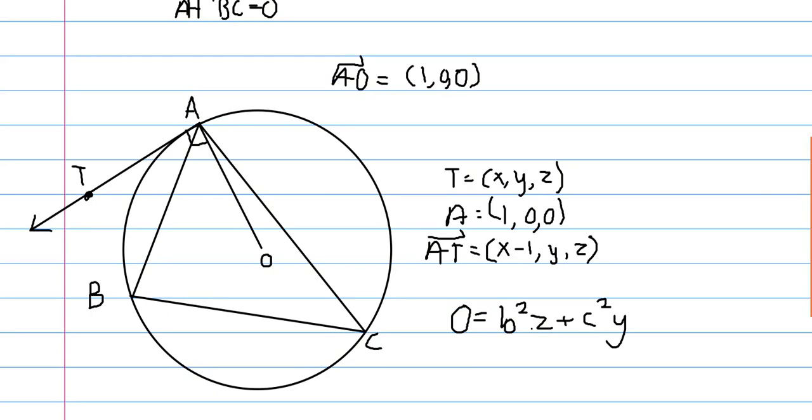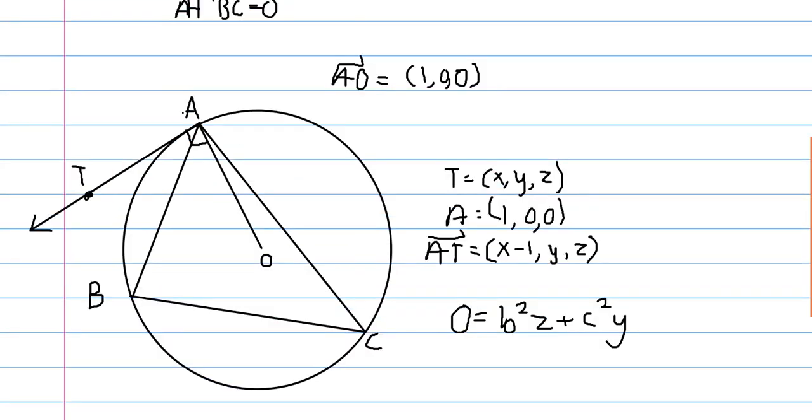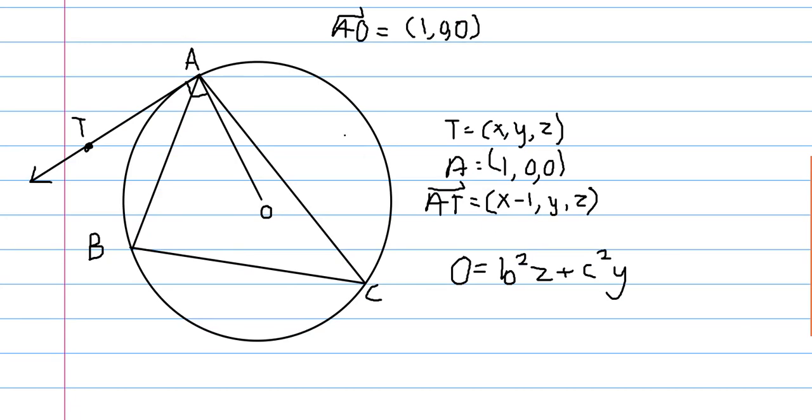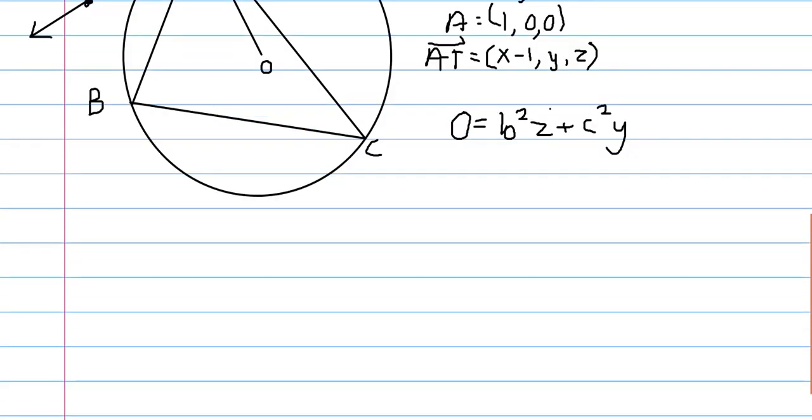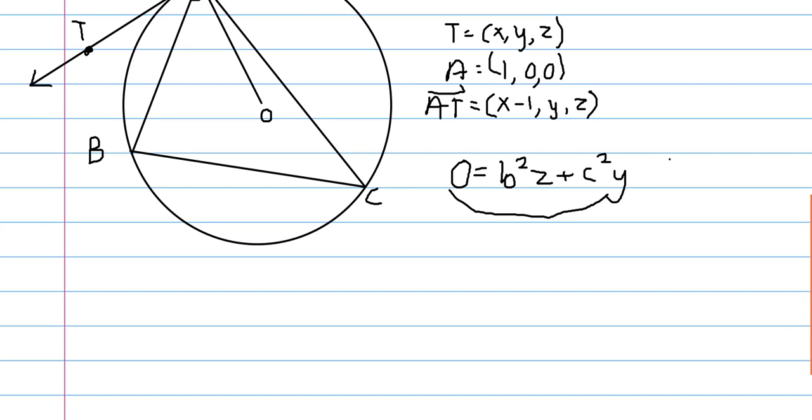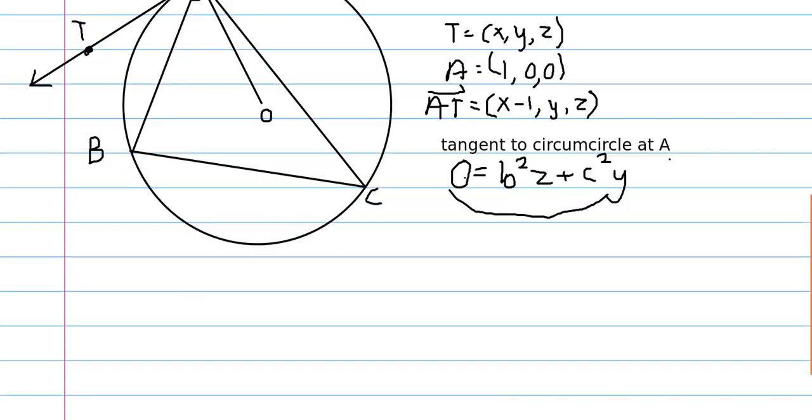And so, in the video that will be posted on the same day as this video, I will show a geometry problem that I solve. And it's not an Olympiad problem, actually, but I used barycentric coordinates for the first portion of it. And specifically this formula. So, this is the tangent to circumcircle at A. And, obviously, you'd have cyclic varieties.